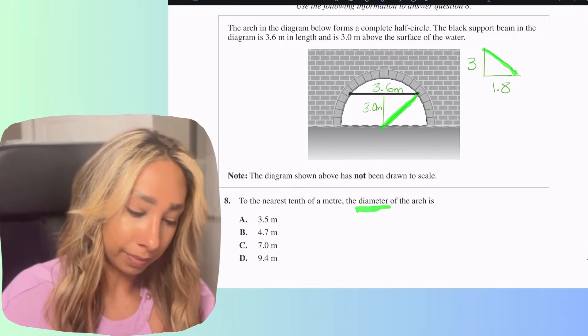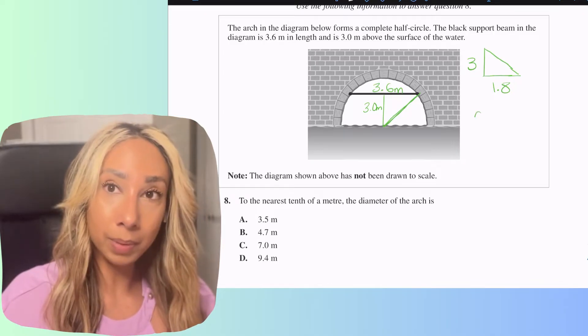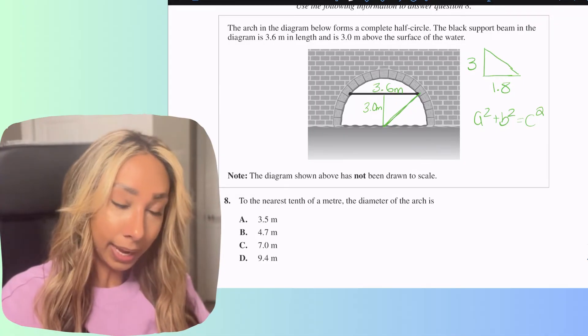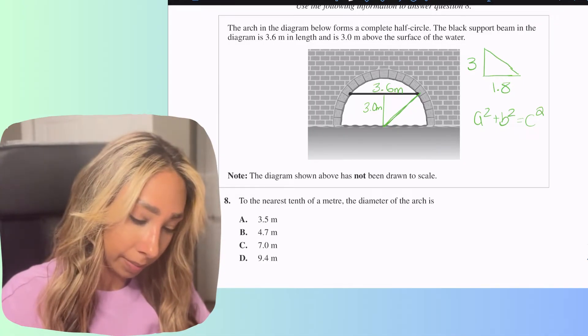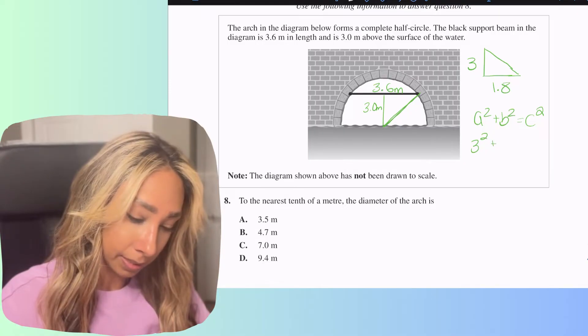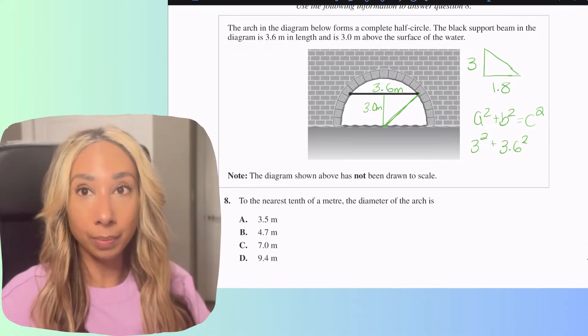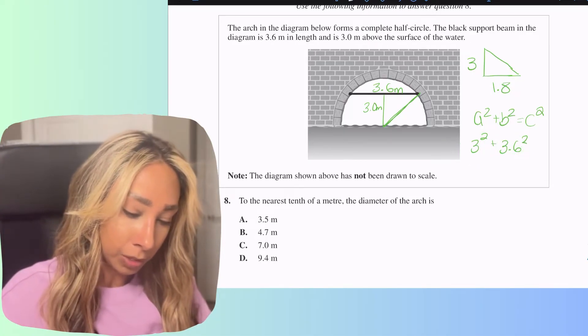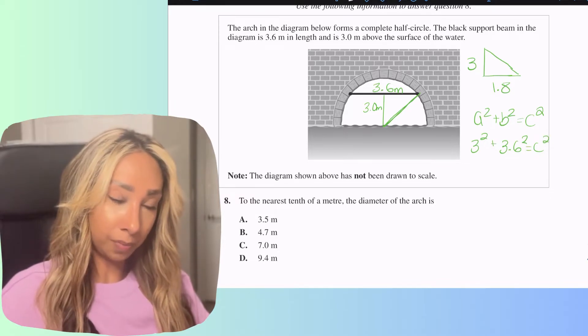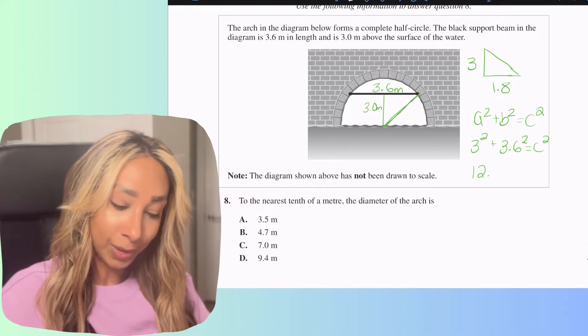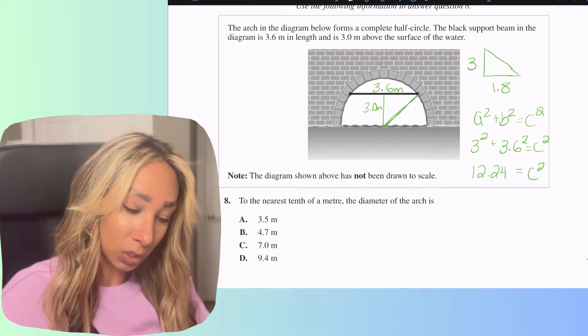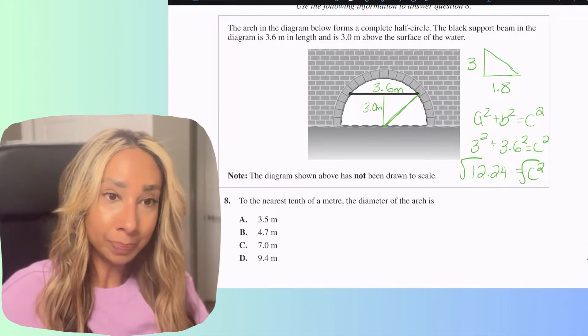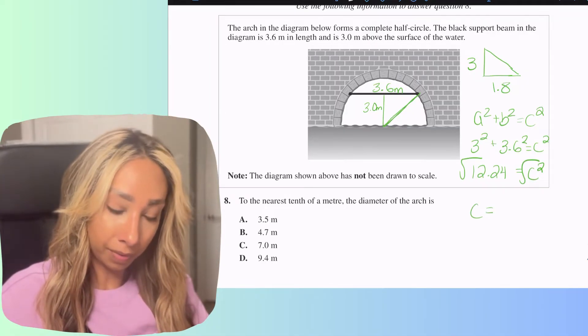Okay so let's go ahead and plug in everything here. So a squared plus b squared equals c squared. My a is going to be 3 squared plus b squared which is 3.6 squared. Now remember you can interchange those a and b doesn't matter, you just can't get confused with c. C is our unknown value so let's combine those together that's going to give me 12.24 which is equal to c squared. I can then take the square root of both which is the opposite of squaring it and that's going to leave me with c is equal to 3.5 meters.